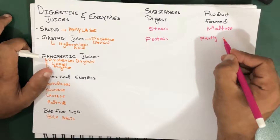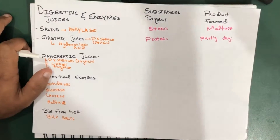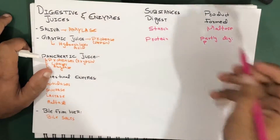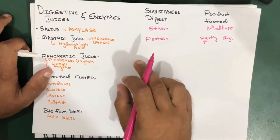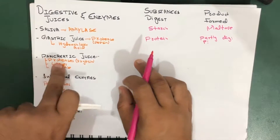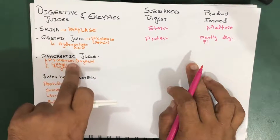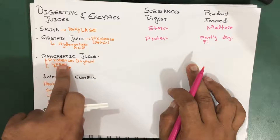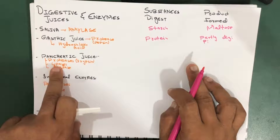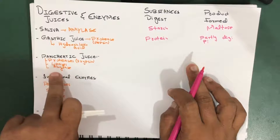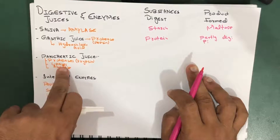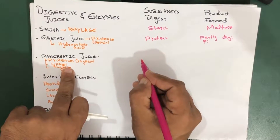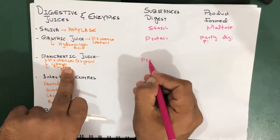So it digests them only partly, not completely — the product is considered as partly digested protein. Coming to the pancreatic juices, we have proteases (which is trypsin), lipases, and amylase. The proteases, trypsin, actually digest the proteins.